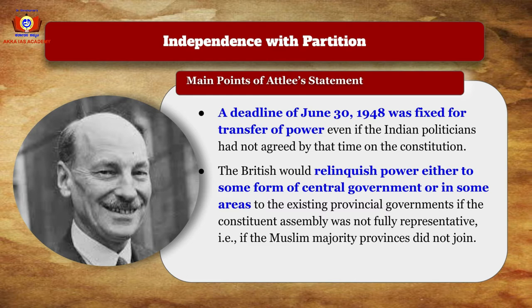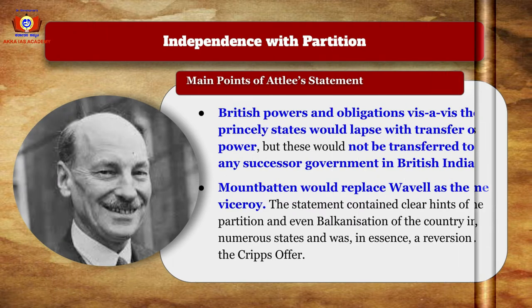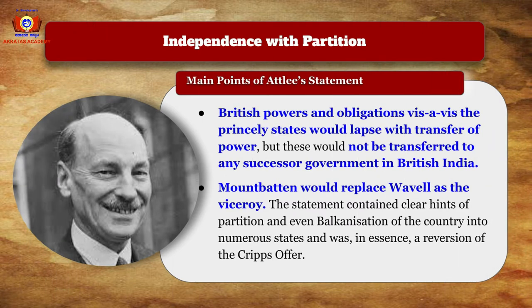Even if Indian politicians had not agreed on a constitution by that time, the British would relinquish power either to some form of central government or to existing provincial governments. If the constituent assembly was not fully representative — that is, if Muslim-majority provinces did not join — the British powers and obligations for the princely states would lapse with the transfer of power, but would not be transferred to any successor government. Mountbatten would replace Wavell as Viceroy.